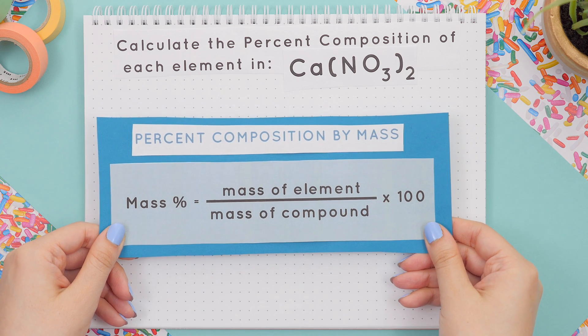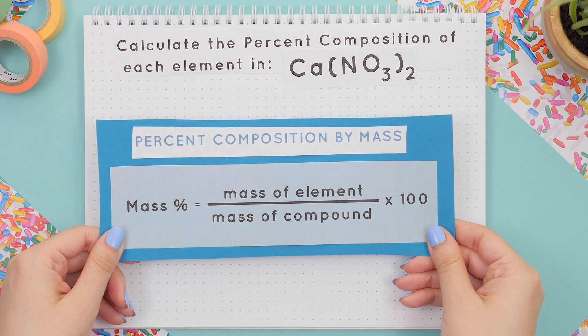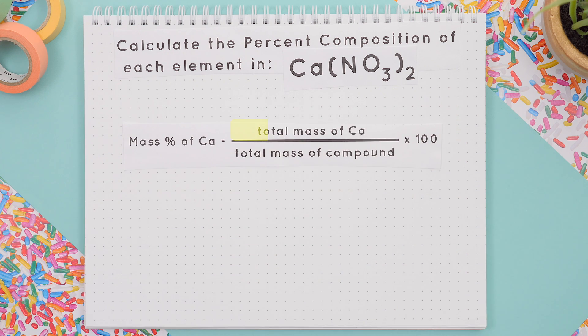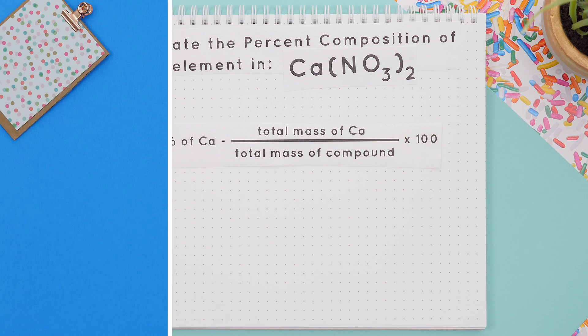We will apply the general percent composition formula to the specific element of calcium, where the total mass of calcium is on top and it's divided by the total mass of the compound, all multiplied by 100.